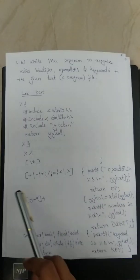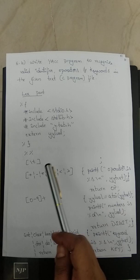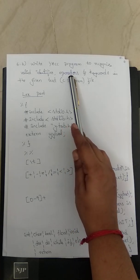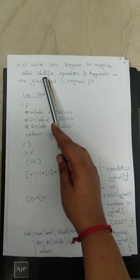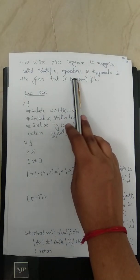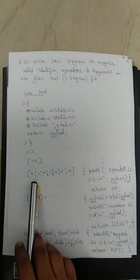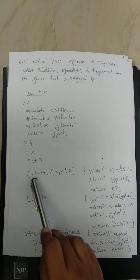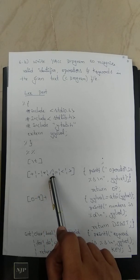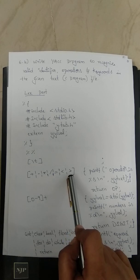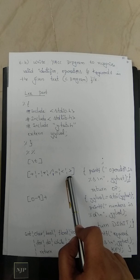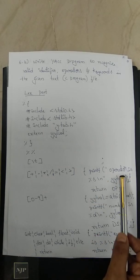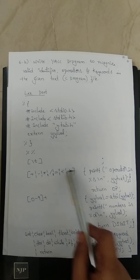In the rule section, we write regular expressions for what is required. Our program may include operators, keywords, and identifiers. For operators in C code, we list: plus, minus, multiplication, division, equals, less-than, and greater-than symbols. These are written in a character class. When this is encountered in the input, the action taken is to print 'operator is', placing the matched string from yytext.